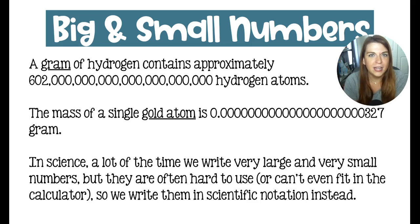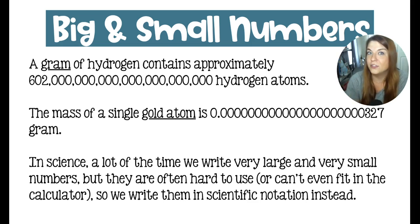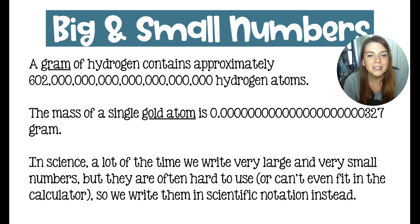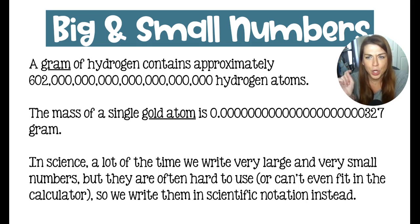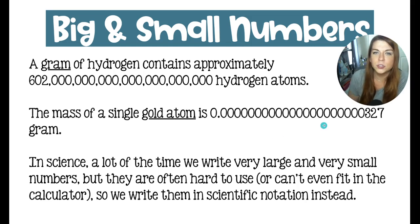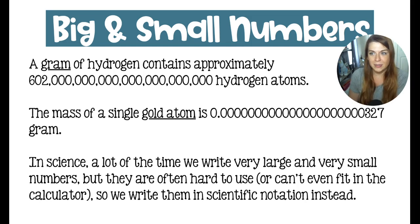One gram of hydrogen has 602 sextillion hydrogen atoms. So in chemistry, we deal with very, very large and very, very small numbers. For example, the mass of a single gold atom is that many zeros — that's a lot. That would be the mass of just one single gold atom.